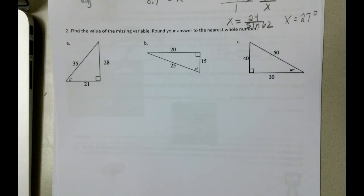Problem number two, find the value of the missing variable. Round your answer to the nearest whole number. The thing about these three particular problems is that we're given the values on all three sides. It also appears that we're finding the angle in each of these.